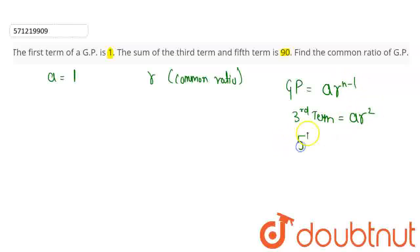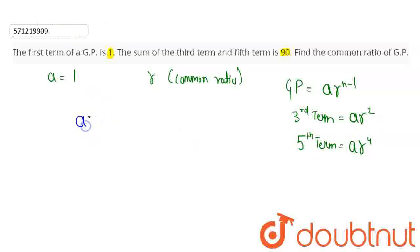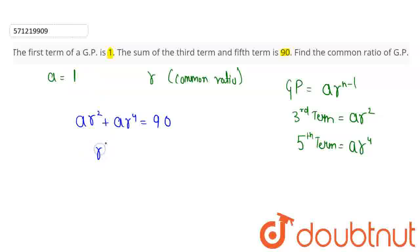Similarly, the fifth term will be A·R^(5−1), which gives A·R⁴. In the question, we have been given that the sum of the third term and fifth term is 90. Here A is 1, so I can write this as R² + R⁴ = 90.